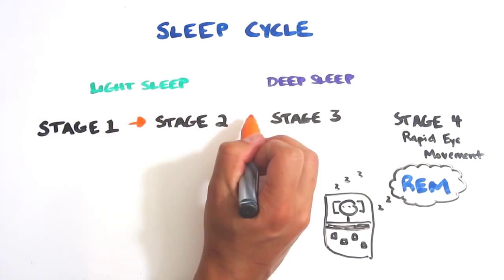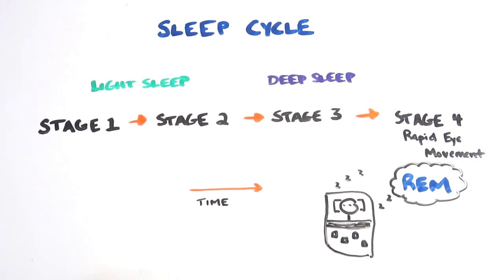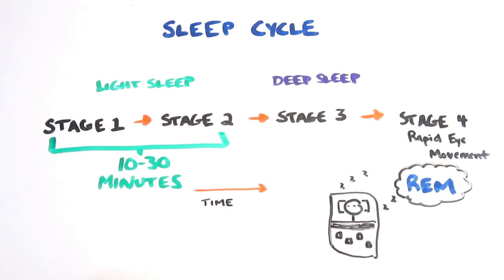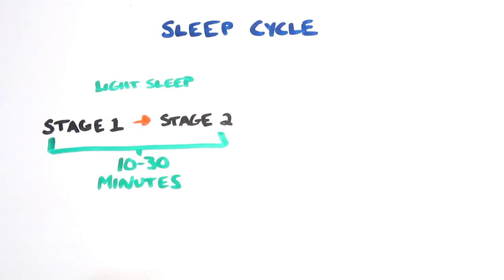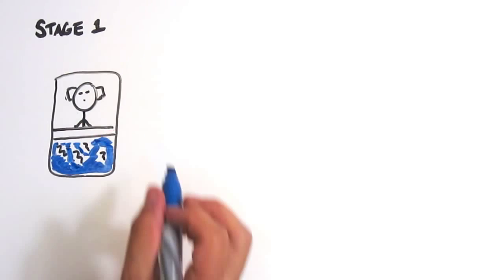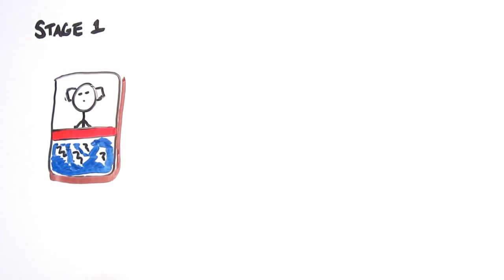The benefits of napping are tied to the length of time in which you're asleep. Naps 30 minutes in length generally only allow time to enter these first stages. In stage one, slow eye movement begins, and if woken, you often feel as though you didn't even sleep.